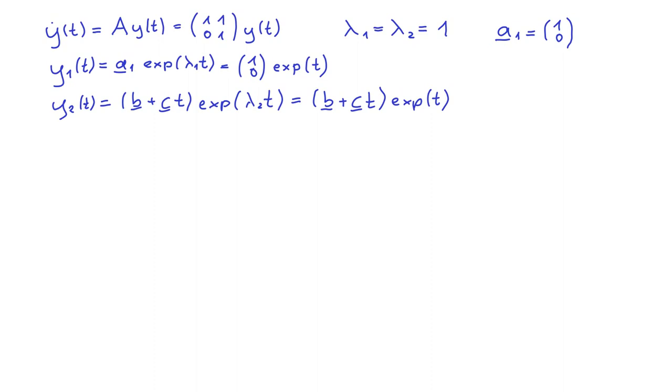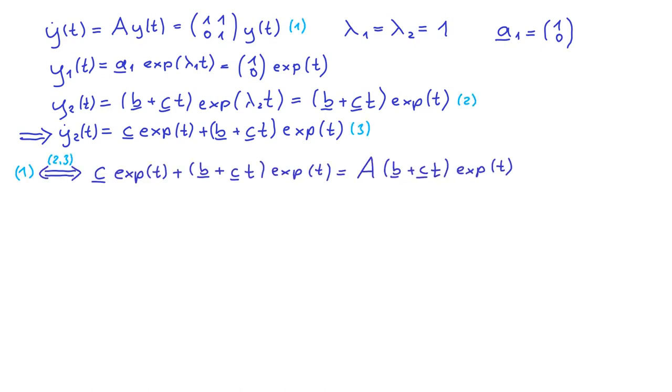The corresponding derivative is c exponential of t plus b plus ct times the exponential of t, as we can find out with the product rule. Inserting this ansatz into our differential equation yields 0. Now we can cancel the exponential, because it's always positive, and then group the terms into constant ones and those that contain t.